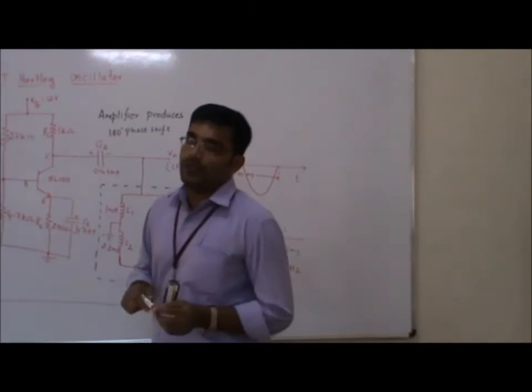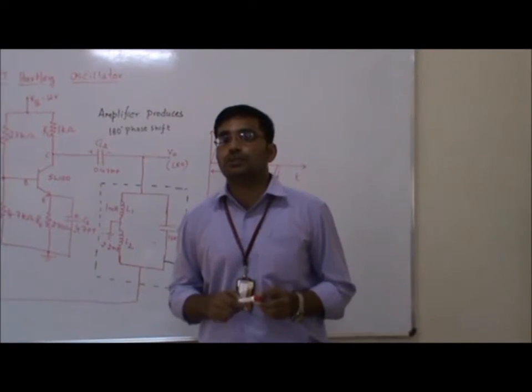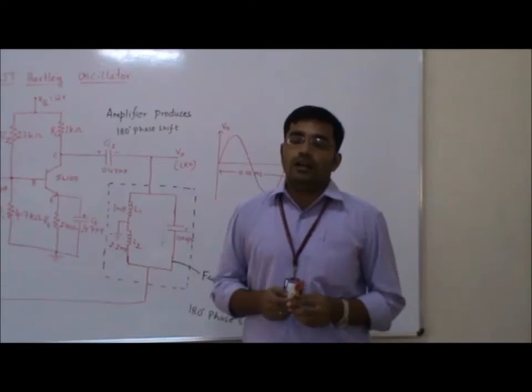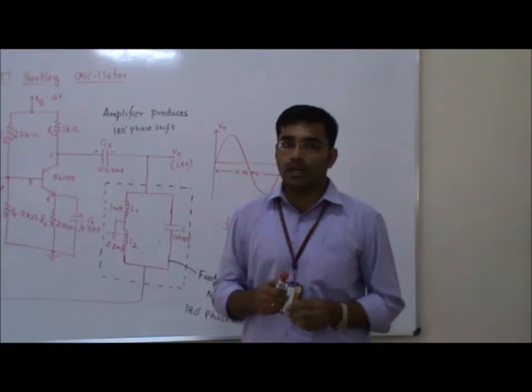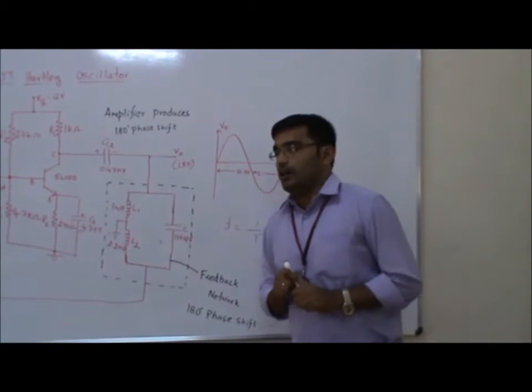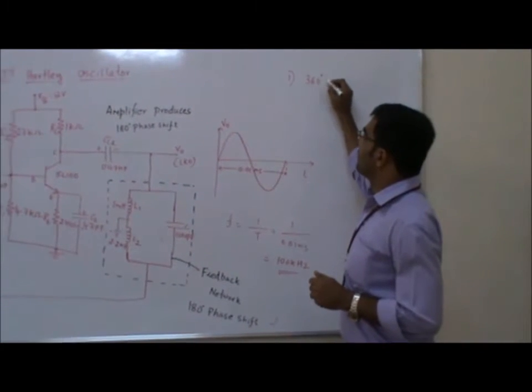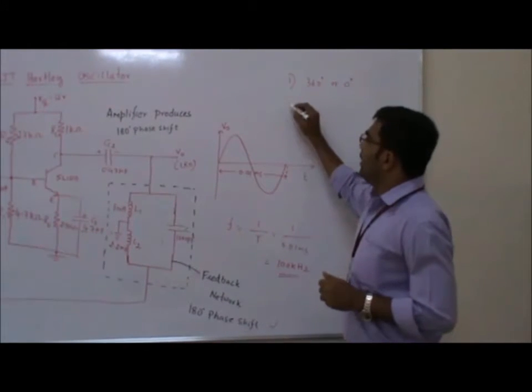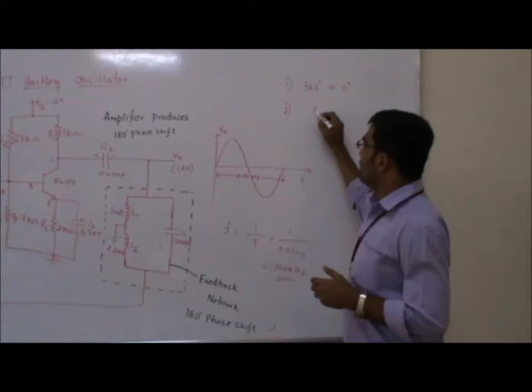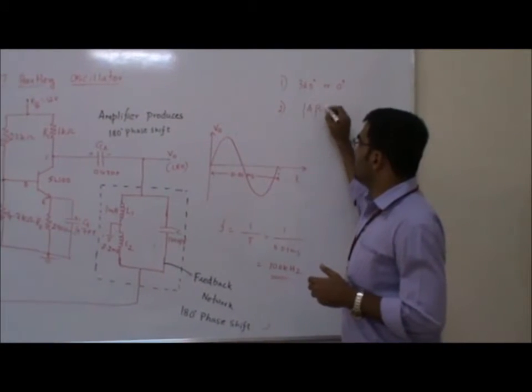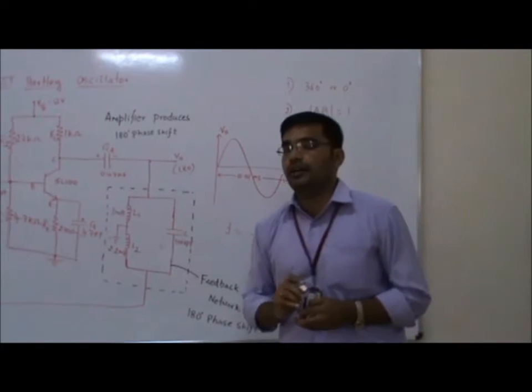An oscillator is a circuit which produces an output signal without any input. It generally uses positive feedback. To obtain sustained oscillation, two conditions must be satisfied: the phase shift around the loop should be 360 degrees or 0 degrees, and the product of gain and feedback factor should equal 1. This is called the Barkhausen criterion.